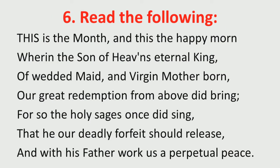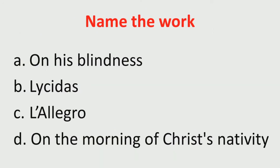Read the following: 'This is the month and this the happy morn wherein the son of heaven eternal king, of wedded maid and virgin mother born, our great redemption from above did bring, for so the holy sages once did sing, that he our deadly forfeit should release and with his father work as a perpetual peace.' Name the work — remember you need to know this poet and his work very well. The choices: A) On His Blindness, B) Lycidas, C) L'Allegro, D) On the Morning of Christ's Nativity.